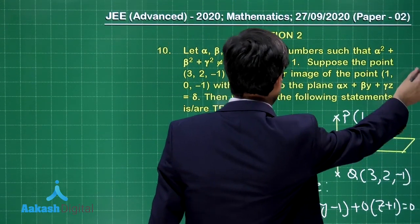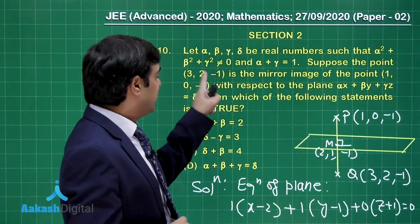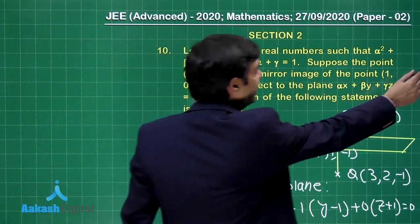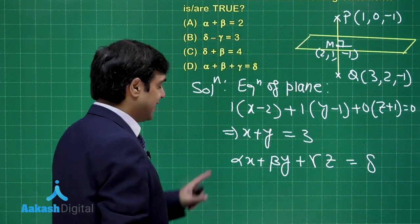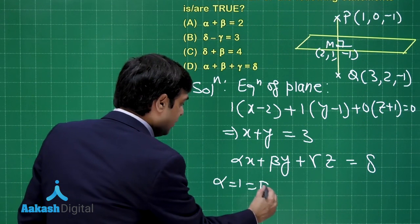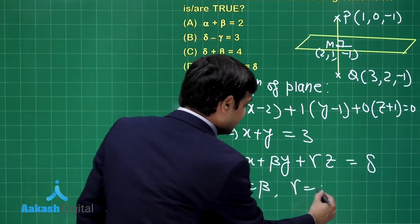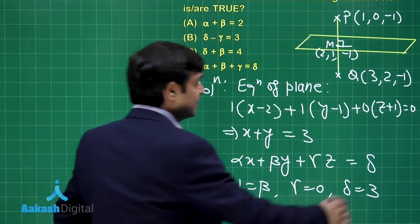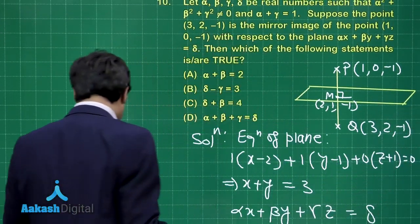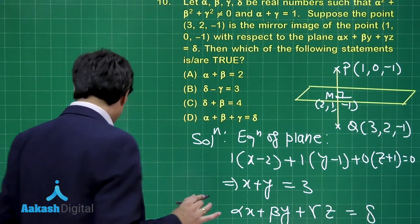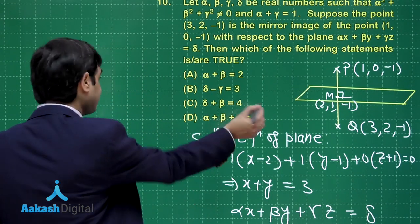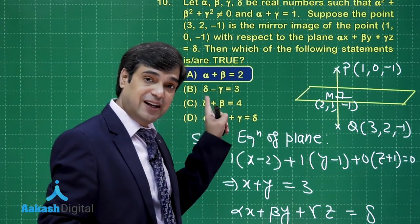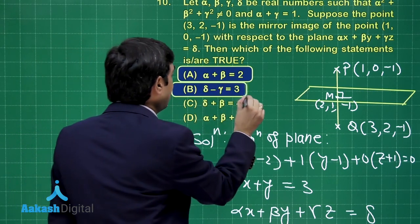The given plane is αx + βy + γz = δ. Comparing coefficients, we get α = 1, β = 1, γ = 0, and δ = 3. Now checking the options: α + β = 2 — correct. δ − γ = 3 − 0 = 3 — correct.